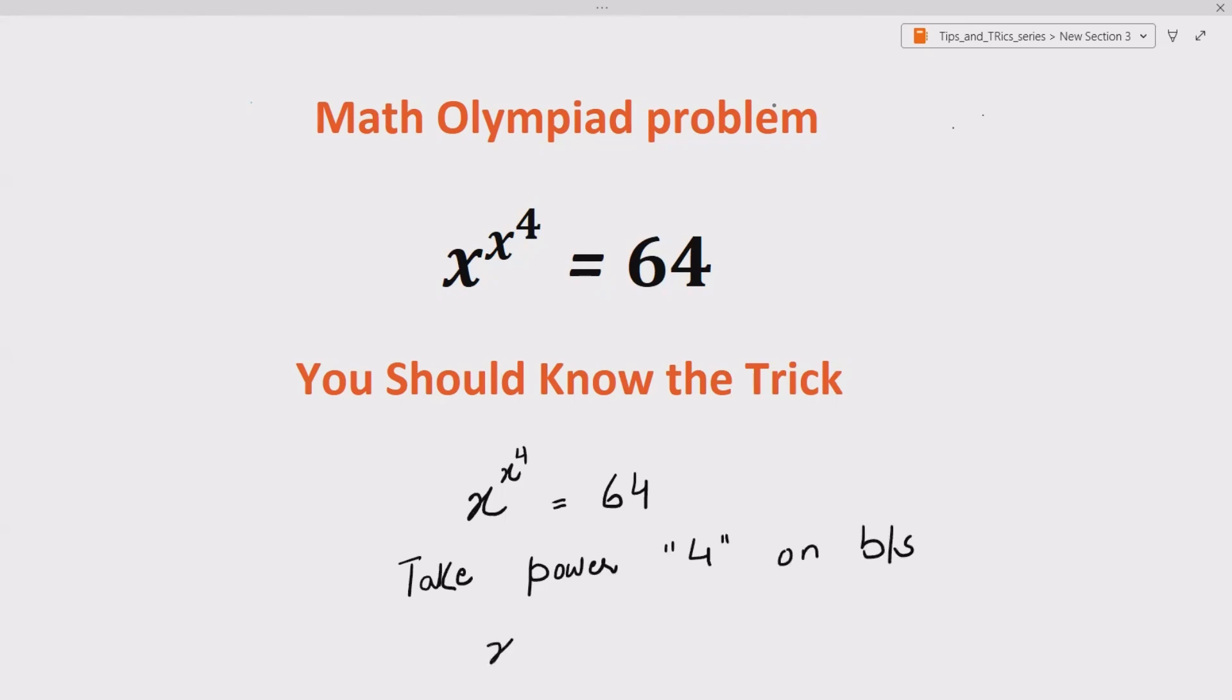When you do that, what you got is x raised to the power x raised to the power 4, whole power 4, equals 64 raised to the power 4.